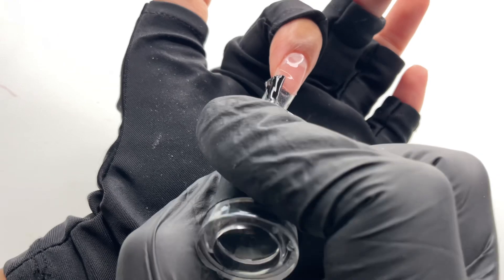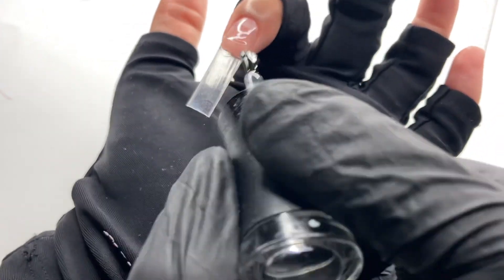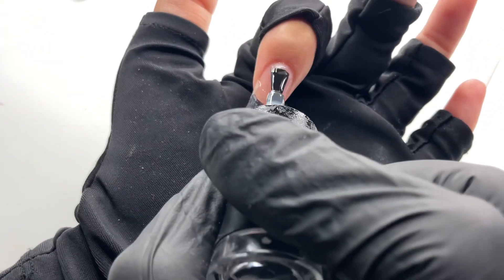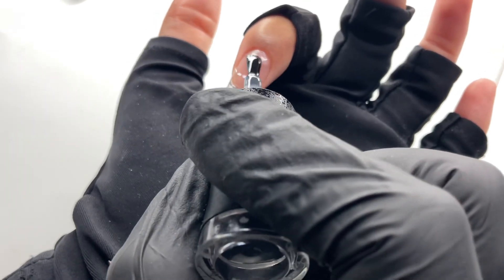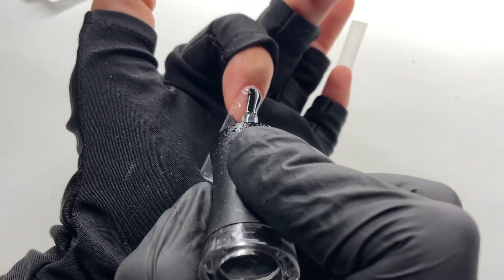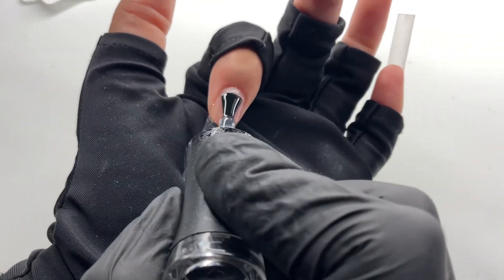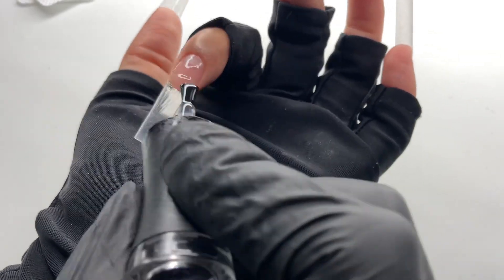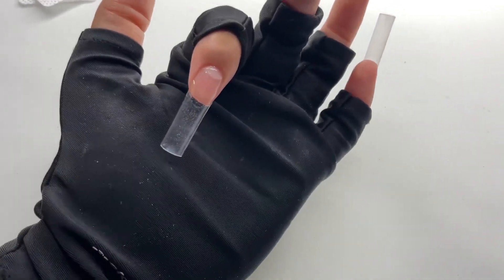Now we are using our gel base coat. I'm using Madam Glam gel base coat and this is a very important step for polygel. You want to make sure you're getting a nice even layer over the natural nail as well as the nail tip, and then fully cure it in your lamp. Do not wipe off the sticky layer. You want it to remain sticky.